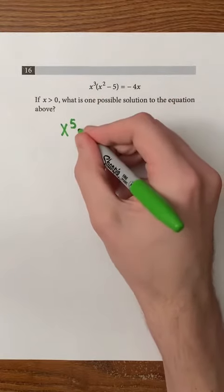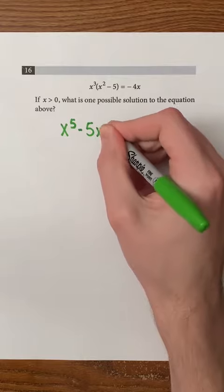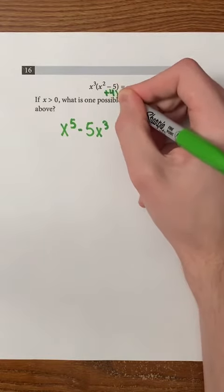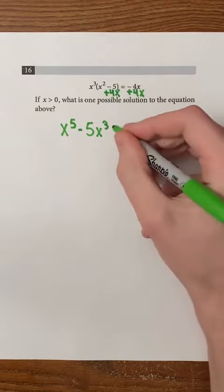Then, x cubed times negative 5 is just negative 5x cubed. We're also going to add 4x to both sides of the equation. This will result in also having 4x on the left side of the equation and 0 on the right side of the equation.